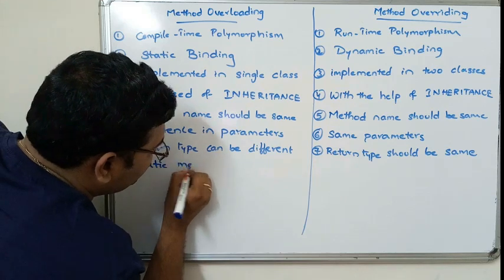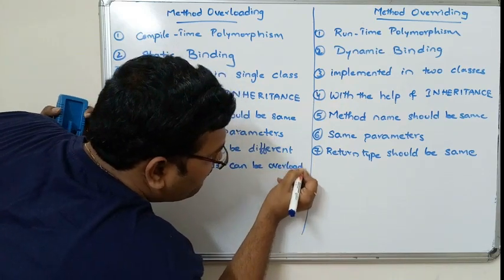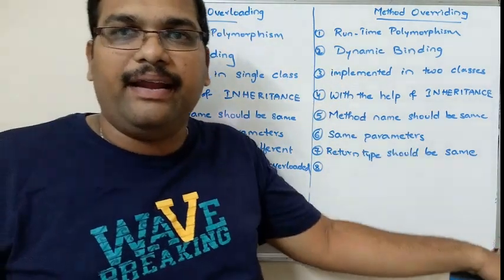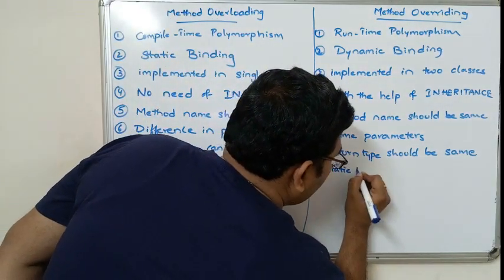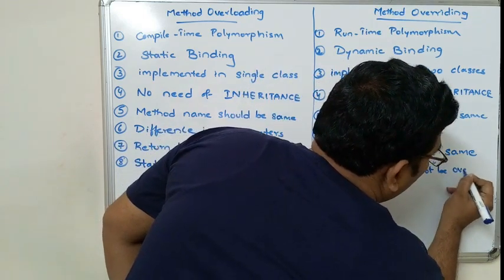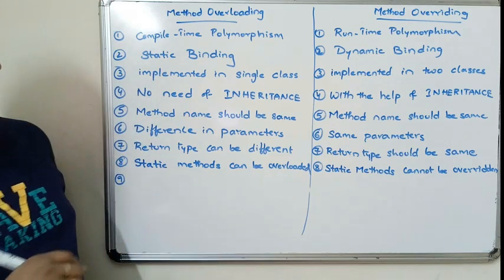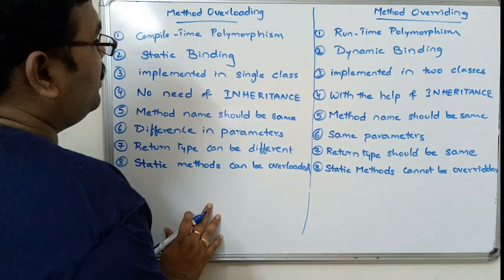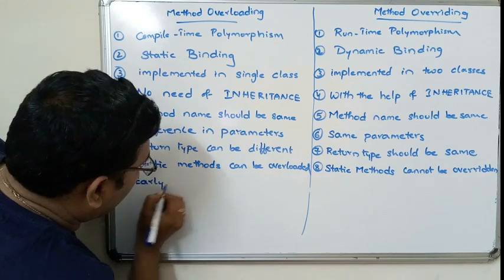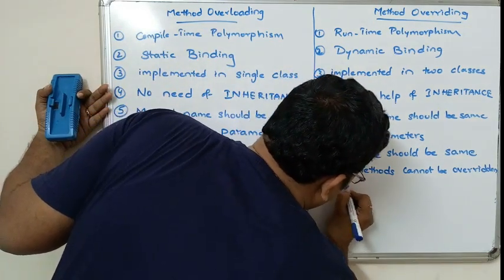Static methods can be overloaded, but static methods cannot be overridden. Because method overloading happens at compile time, it is called early binding, whereas method overriding is called late binding.